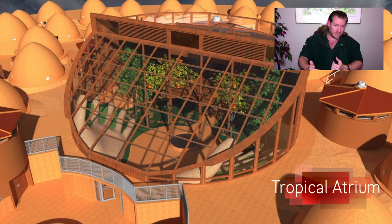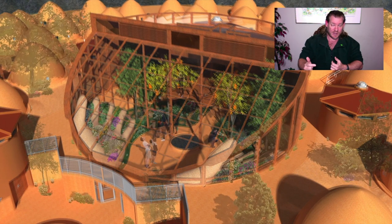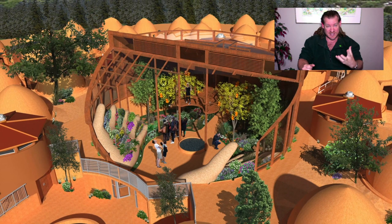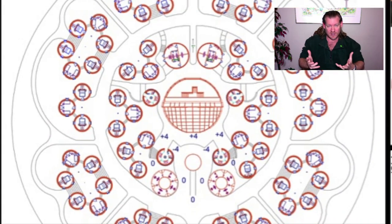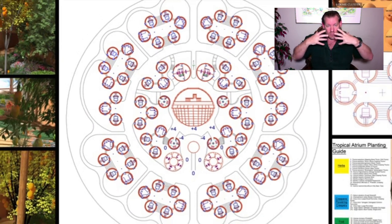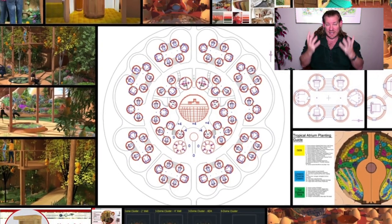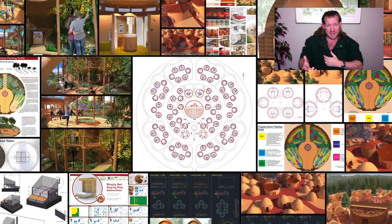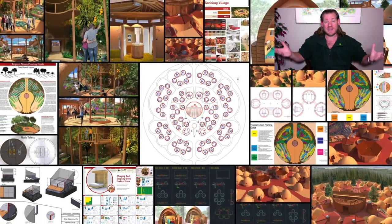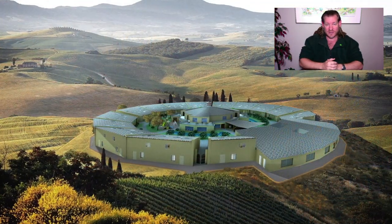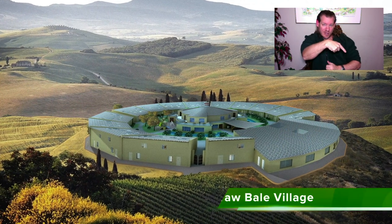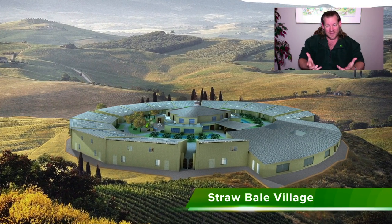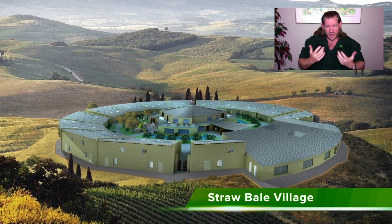One Community is designed so that the more we open source, the more we free share, the more we give away, the more successful we'll be. The more fun we're having, the more beautiful and artistic the environment, the more attention it gets. Our marketing plan is to give away everything we're doing, teach other people how to replicate it, and put out quality content — open sourcing and free sharing everything we create.